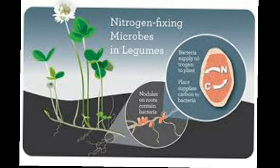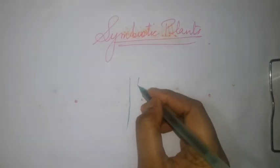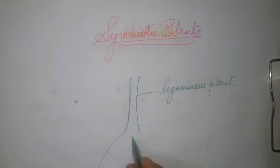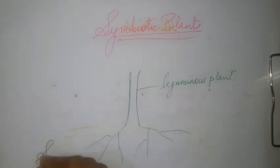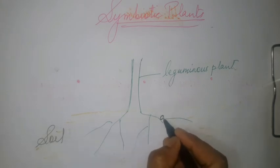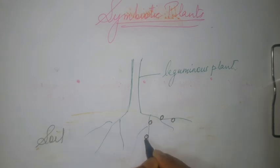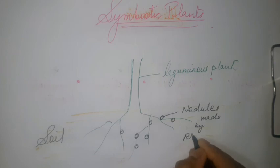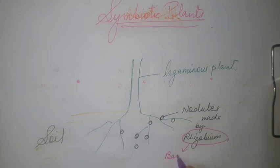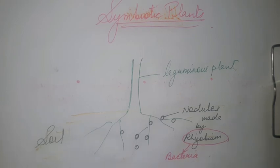Let us understand what rhizobium does with the help of a diagram. This is the leguminous plant and these are the roots present inside the soil. Here, rhizobium produces nodules on these roots. Nitrogen present in the atmosphere gets converted into nitrate due to these nodules, and this is how rhizobium — the bacteria — helps the leguminous plant fix nitrogen and decrease its deficiency. In return, rhizobium gets food and shelter from the leguminous plant.